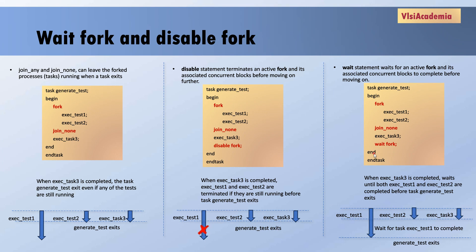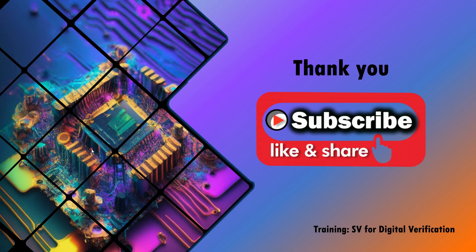This is how, using wait fork and disable fork, we can manage fork processes outside the fork-join block as well. This is all for this video. Thank you everyone — for more such videos please like, share, and subscribe.